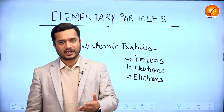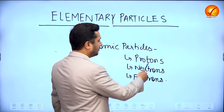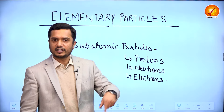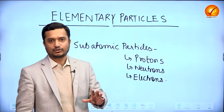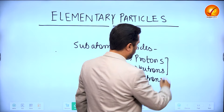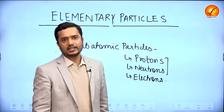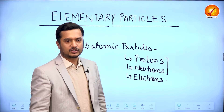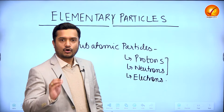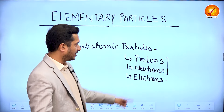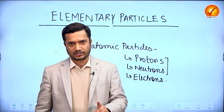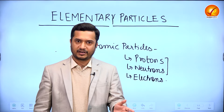But with the advancement of science, we again got to know that even these are not the smallest particles, as they are further made up of still smaller particles called elementary particles. Protons and neutrons are made up of still smaller particles called elementary particles — for example, the constituents of protons and neutrons are quarks, and quarks are the elementary particles.